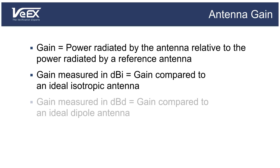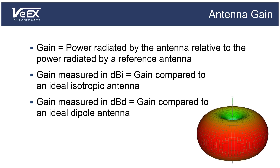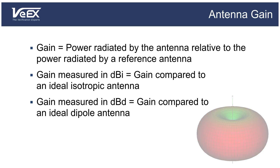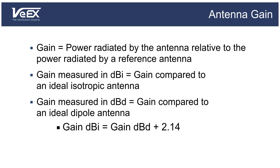If instead the gain is expressed in dBd, then the antenna efficiency is compared to an ideal dipole. As we've seen, the dipole radiation looks like a donut. To convert back and forth between dBi and dBd values, you can use the formula: gain in dBi equals gain in dBd plus 2.14. So an antenna with a gain of 3 dBi has a gain of 0.86 dBd. Note that most vendors use the dBi notation.